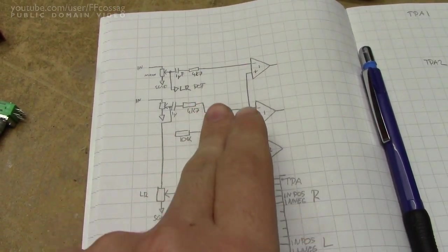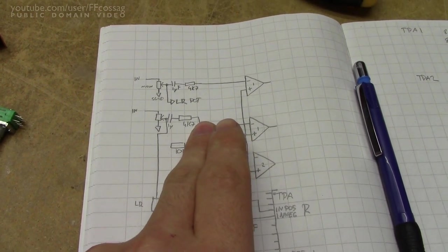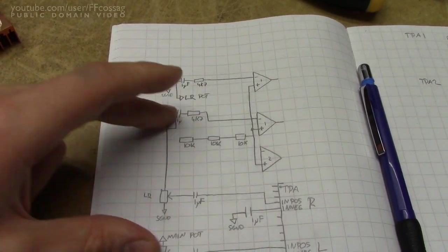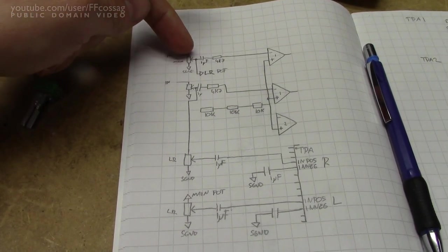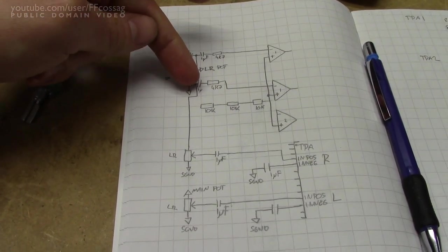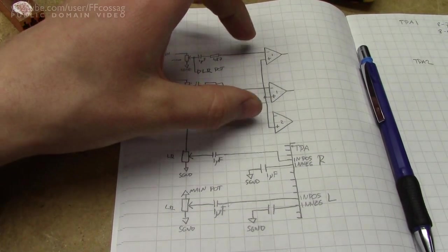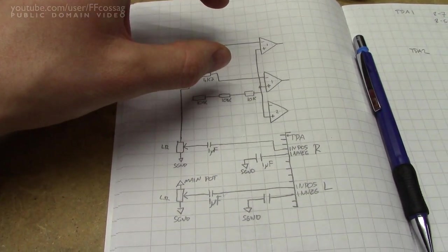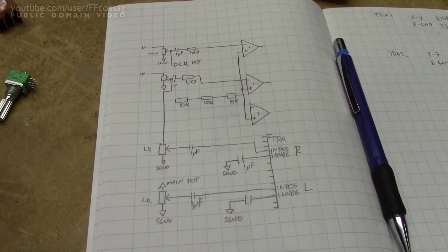Basically, it's connected straight after the main volume potentiometer. The volume potentiometer for the left and right channels just tap off before the op-amp, so this first op-amp has nothing to do with the left and right channels.